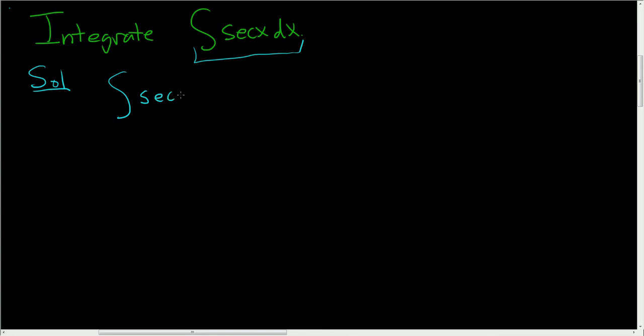What you do, the trick, is to multiply by secant x plus tangent x, all over secant x plus tangent x.